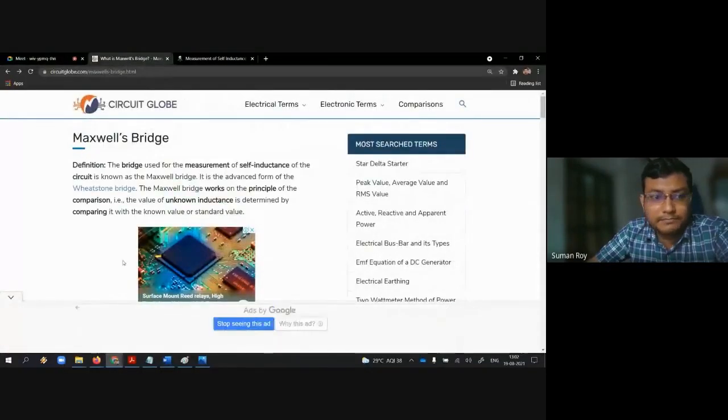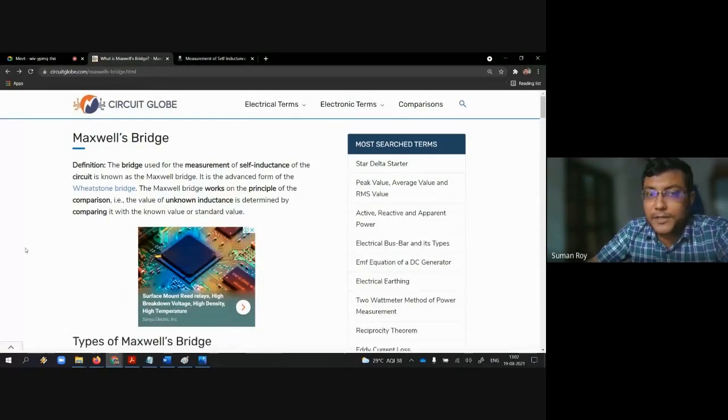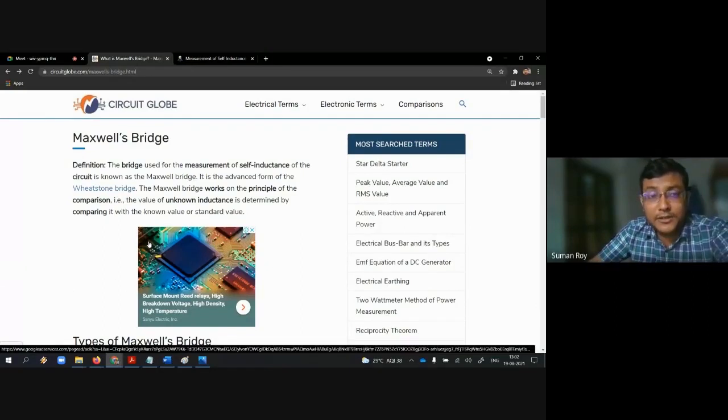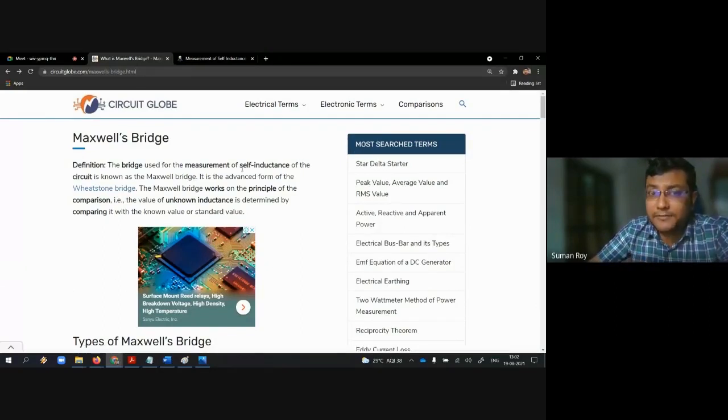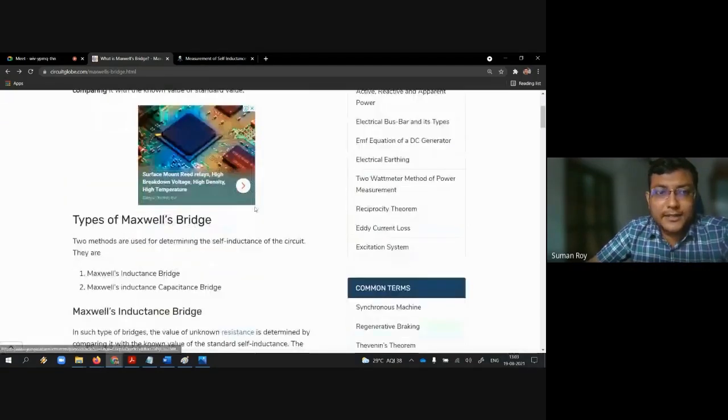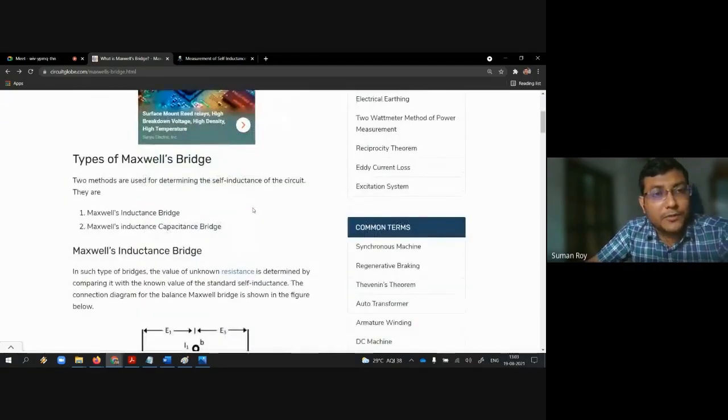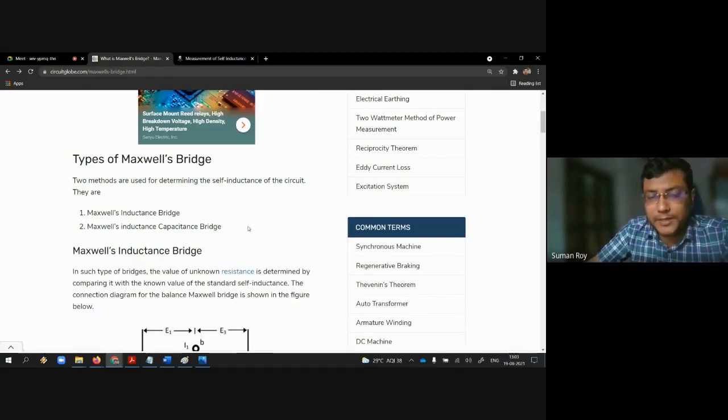Here is the definition of Maxwell's Bridge. A bridge that is used to measure self inductance is called Maxwell Bridge. It is an advanced form of Wheatstone Bridge. There are mainly two types: Maxwell's inductance bridge and Maxwell's inductance capacitance bridge. Both bridges are used to measure self inductance of a circuit.